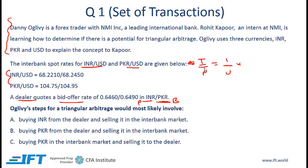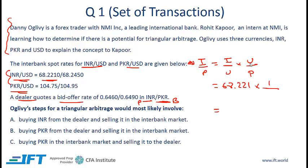The INR to PKR bid equals the INR to USD bid multiplied by the USD to PKR bid. The INR to USD bid is given — that's 68.221. However, there is a slight complication: here we have PKR as the base currency but the quote shows USD as the base currency, so we need to invert. To get the USD to PKR bid we take the reciprocal of the offer. So we multiply by 1 over 104.95, and when we do this calculation we get 0.65.